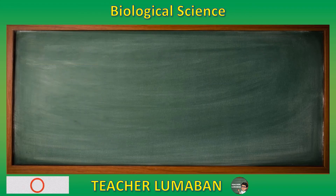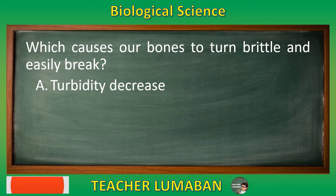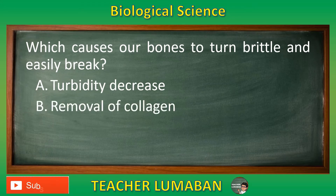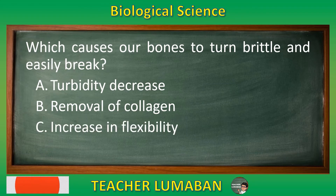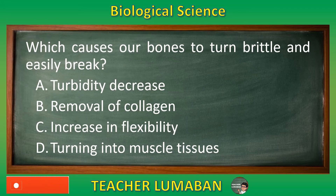Which causes our bones to turn brittle and easily break? Letter A: Turbidity decrease. Letter B: Removal of collagen. Letter C: Increase in flexibility. Letter D: Turning into muscle tissues. Choose the suitable answer based on the given choices in 5 seconds.